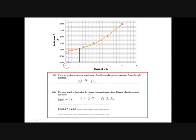And then from 1 to 2, so again from 1.1 to 1.5, so 1.5 take away 1.1, the increase is about 0.4 ohm.